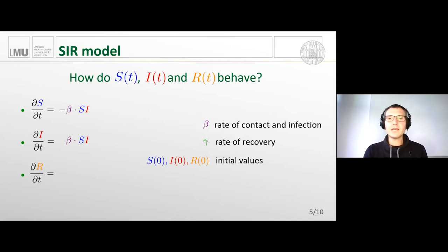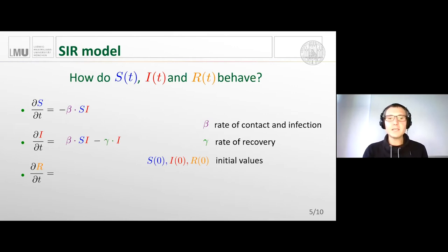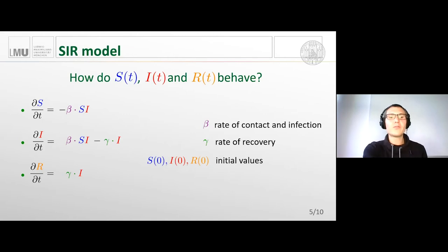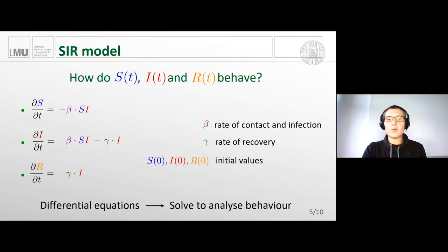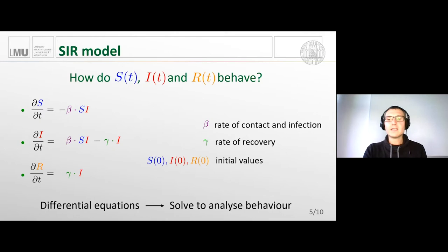The second transition is from I to R — recovery. You recover at rate gamma, proportional to I: the more infectious people there are, the more recover. So the infectious decreases with rate gamma times I, and the same term gets added to R — everything removed from I is added to R. This defines the differential equation system that tells us how these functions behave, which we solve to analyze the spread of a pandemic.